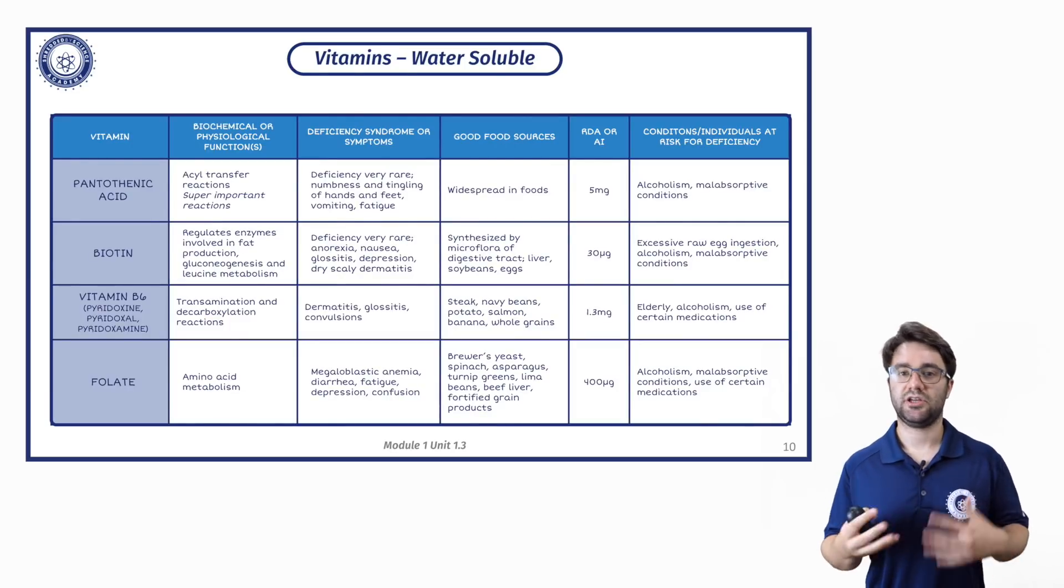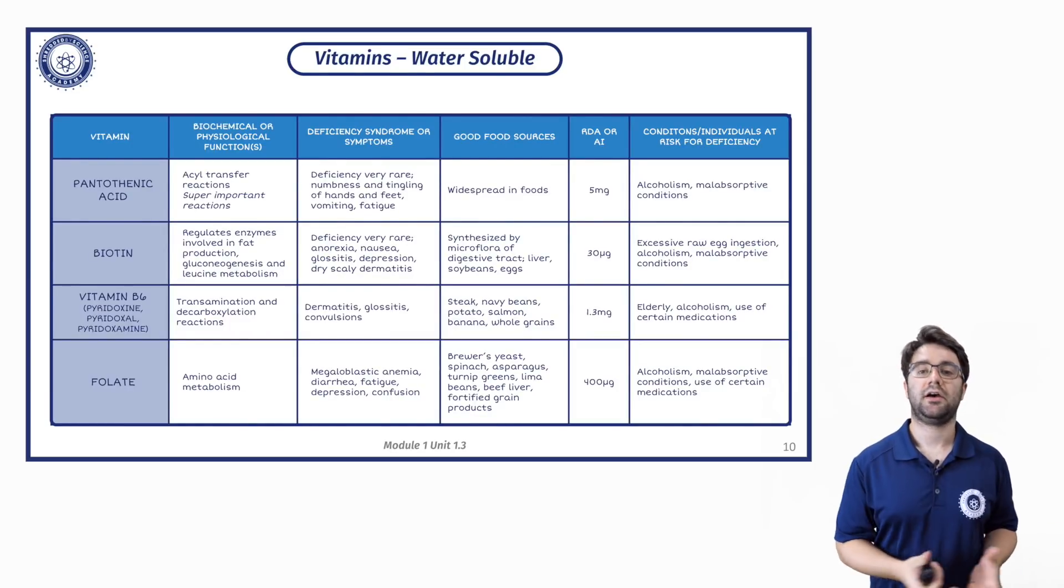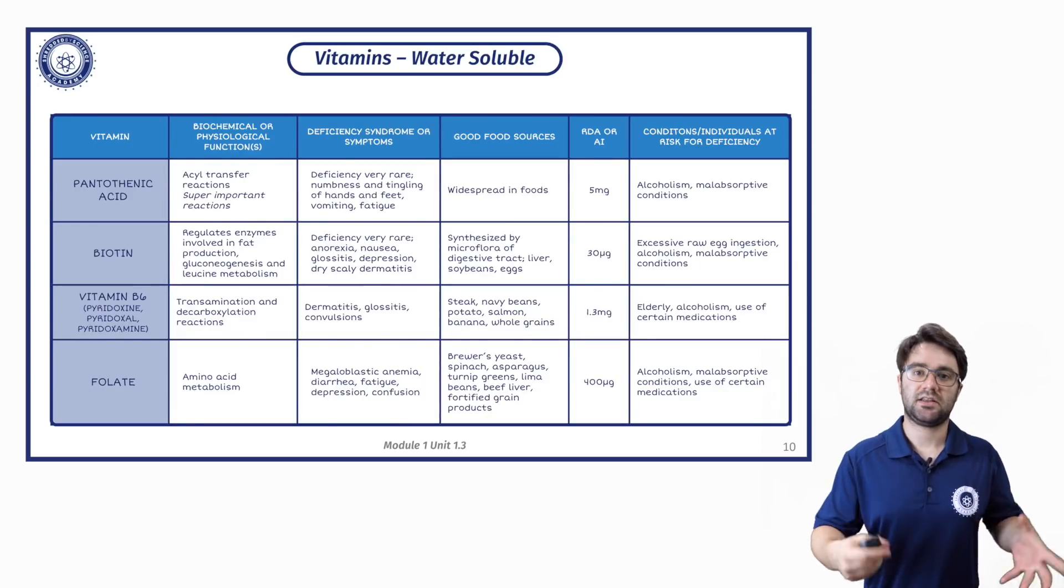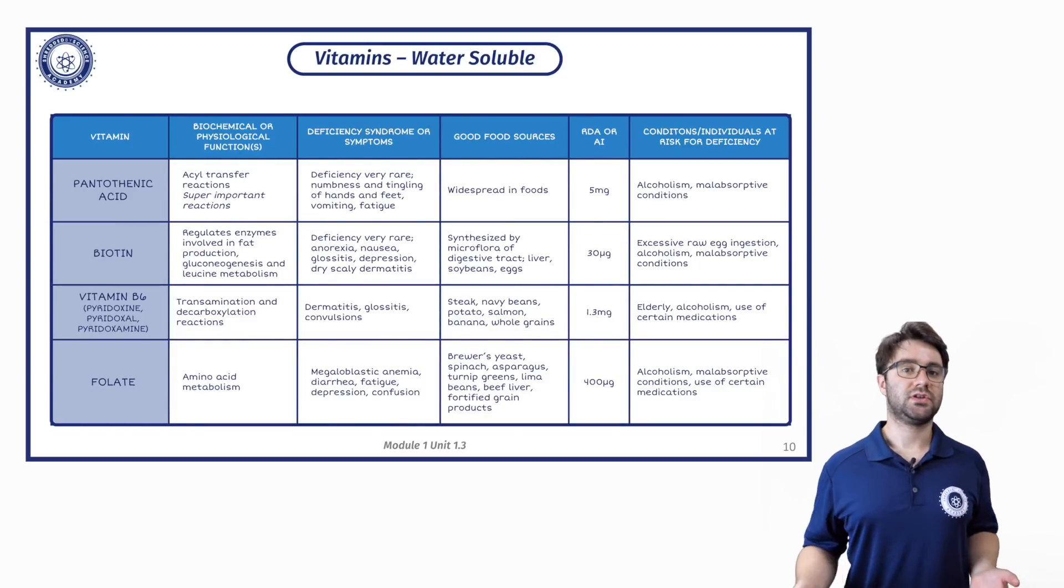So dairy products and milk and yogurt and cheese, they do contain some water. Animal products, again, the muscles that you eat from the animals, again, tend to have a decent water content. So it makes sense that they contain lots of the water soluble vitamins.